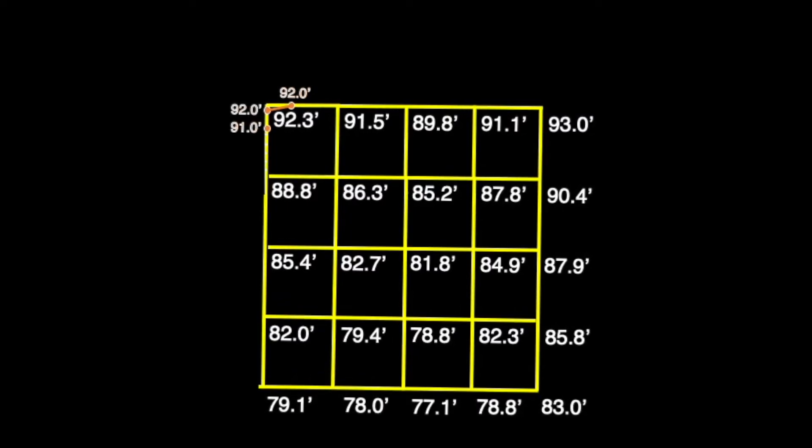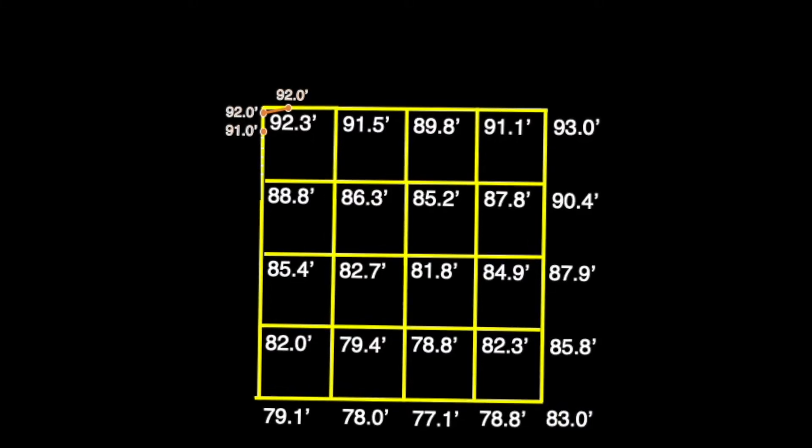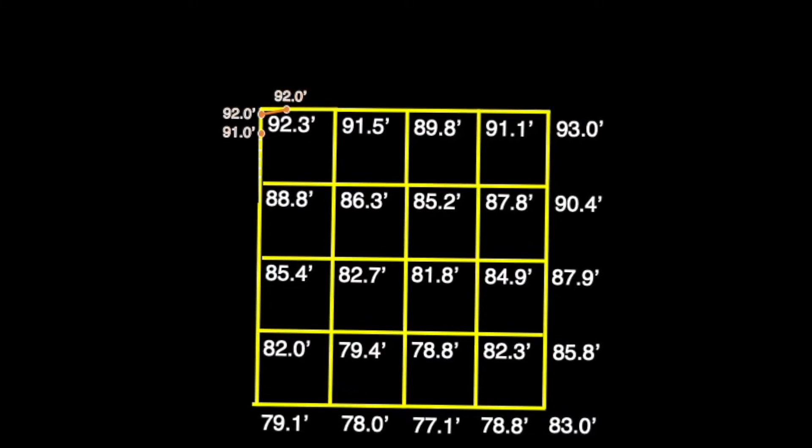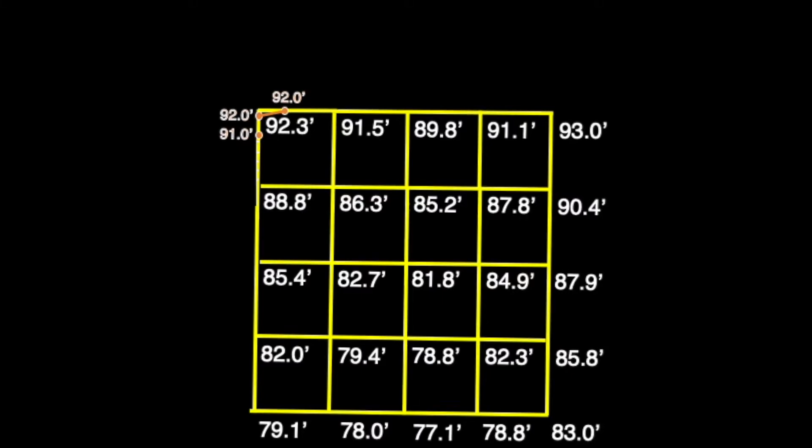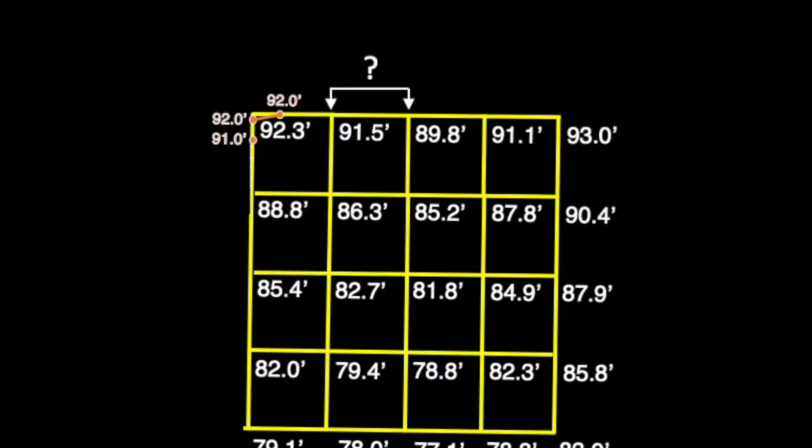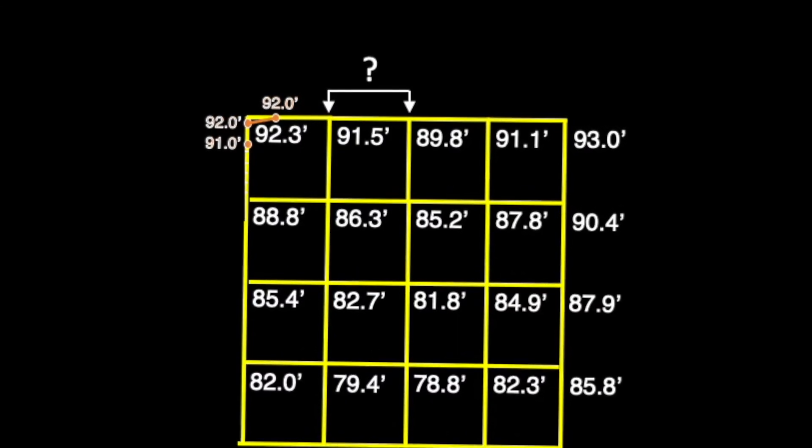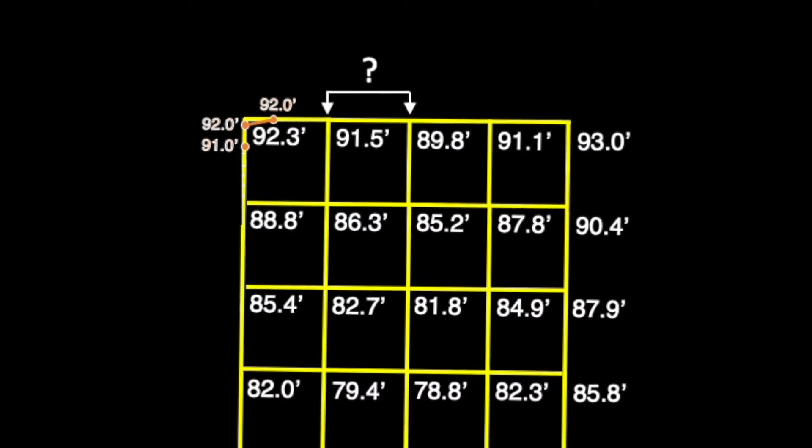With the 92-foot contour line in place and one point of the 91-foot line in place vertically, this would be a good time to pause the video to see if you can establish the amount of equally spaced units on the horizontal for the same 91-foot point using the next two elevation measurements paired up in our grid.